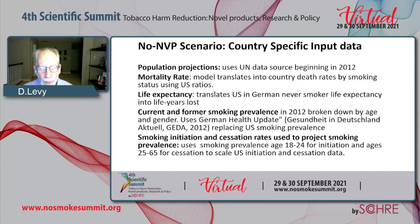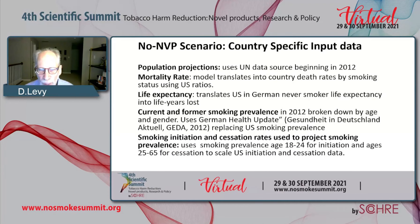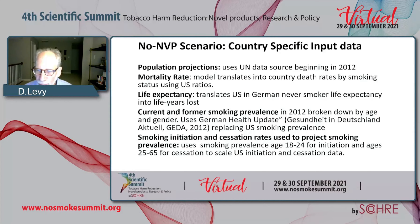The most important part underlying this is a very complex smoking cohort model, and we translate that into the German experience using one of the larger, more complete data sets. We use the 2012 VITA data set, matched up with our initial year and broken down by age and gender. We also use that to transform the initiation and cessation rates used for cohort progression. That's the part of the model that projects the impact of smoking in the absence of e-cigarettes.